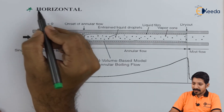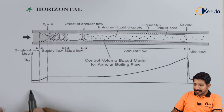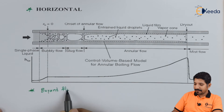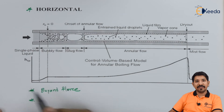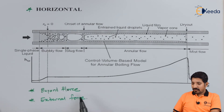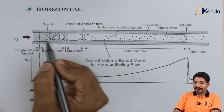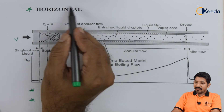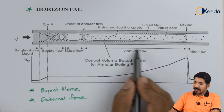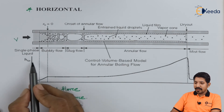A similar study can be done for horizontal flow. The only difference is that the gravitational force is not dominant. In pool boiling we only depend on the buoyant force for bubble motion, but in flow boiling both the buoyant force and the external force — due to the velocity given to the fluid — come into play. Similar to vertical flow, horizontal flow can be categorized in the same regimes: single phase liquid, bubbly, slug, annular, mist, and then single phase vapor.